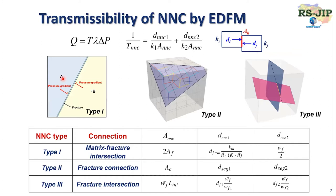For the EDFM method, we proposed three different non-neighbor connection types. The first is the matrix-to-fracture intersection, the second is the fracture connection within the same fracture plane, and the third is the fracture intersection between two different fractures in a single grid. All the calculation equations are proposed here.